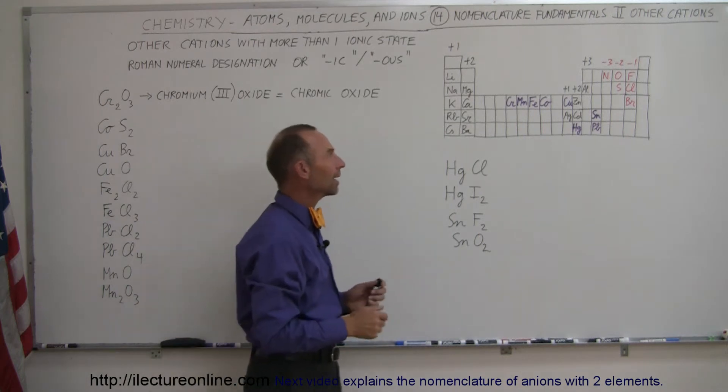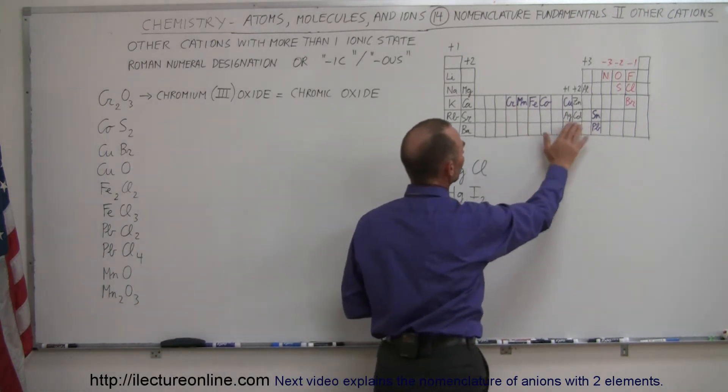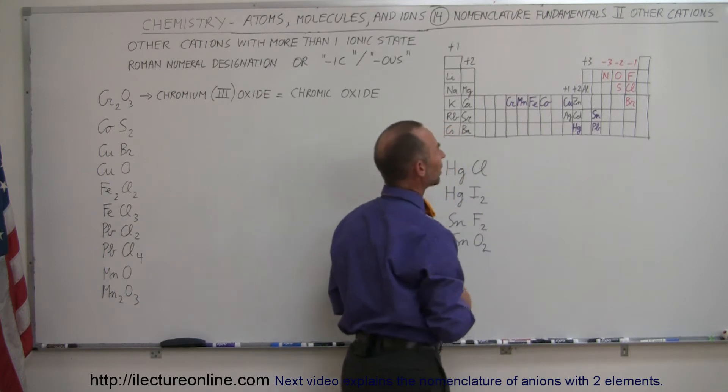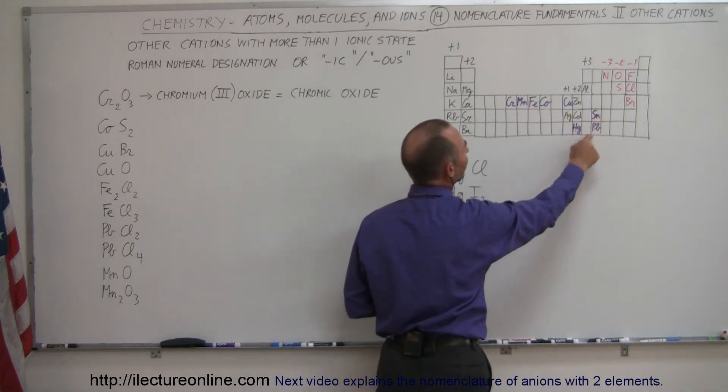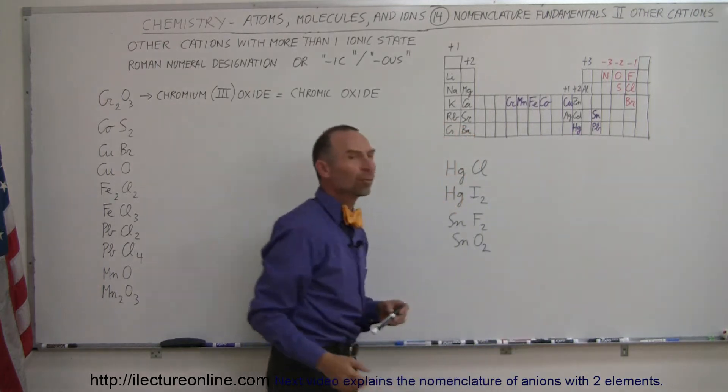But now we're going to look at some cations in the metal region here which have more than one possible ionic state. We have chromium, manganese, iron, cobalt, copper, tin, mercury, and lead for some examples.